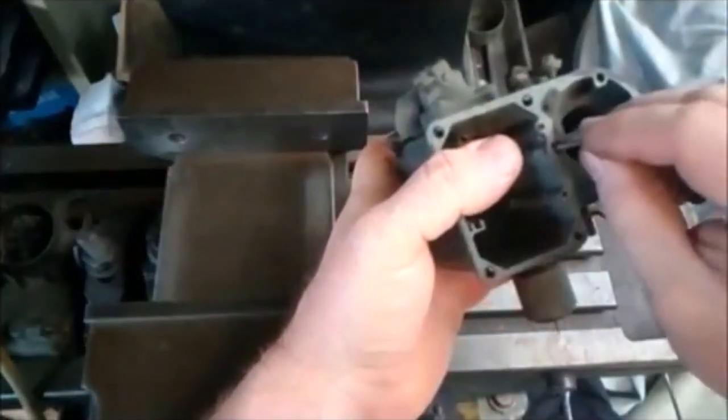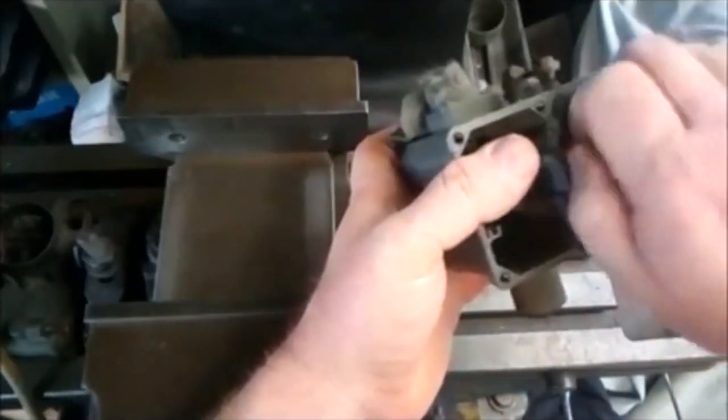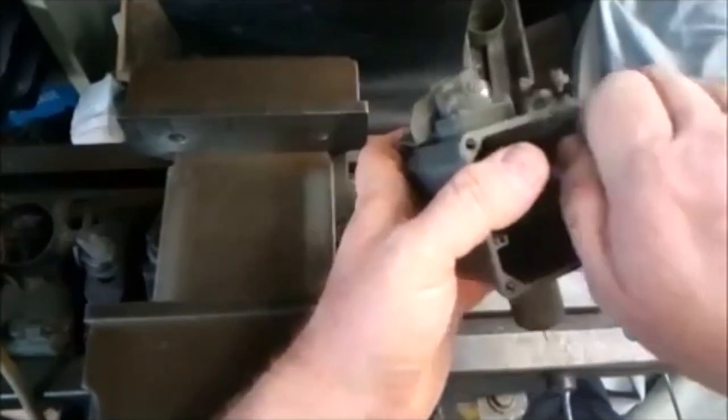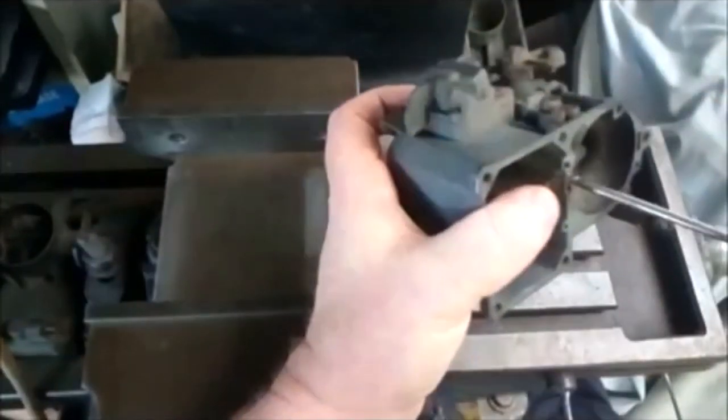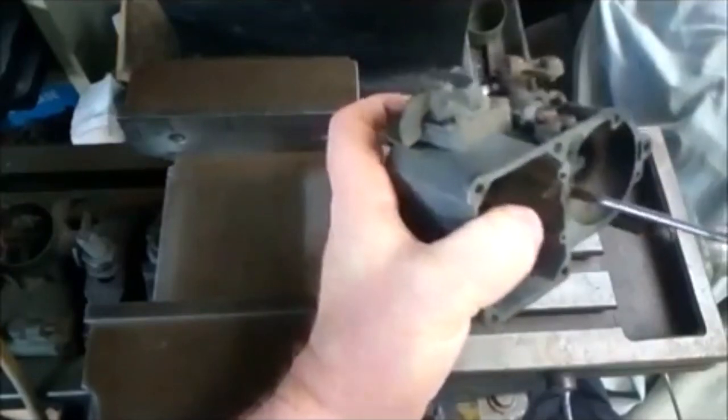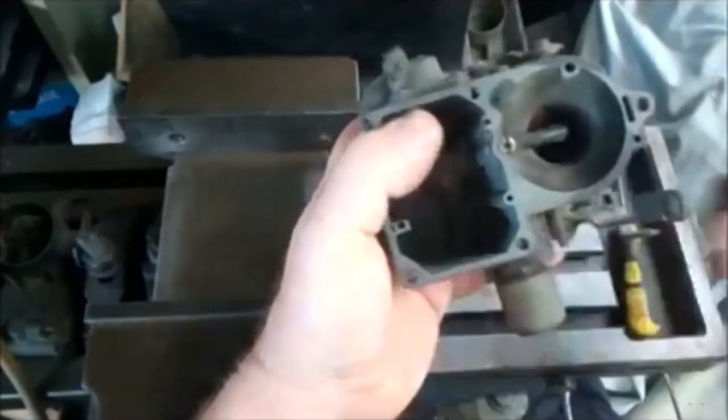So we now place the emulsion tube back into the body of the 34 PICT. Make sure that it's screwed down and seated down because you don't want it to introduce any extra air that it doesn't have to.